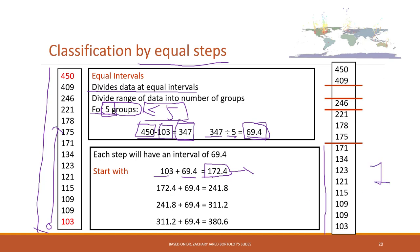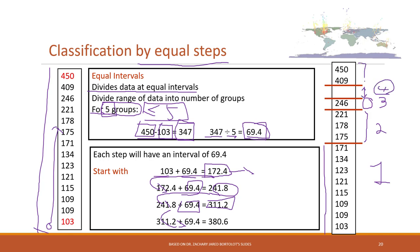We then increase by the interval to define the second group, and continue for each subsequent group. In this example, the fourth group ends up having nothing, and the fifth group has two values. So the final result is that we effectively have four groups, because the fourth group contains no values — even though we divided by five, we only get four groups with actual values.